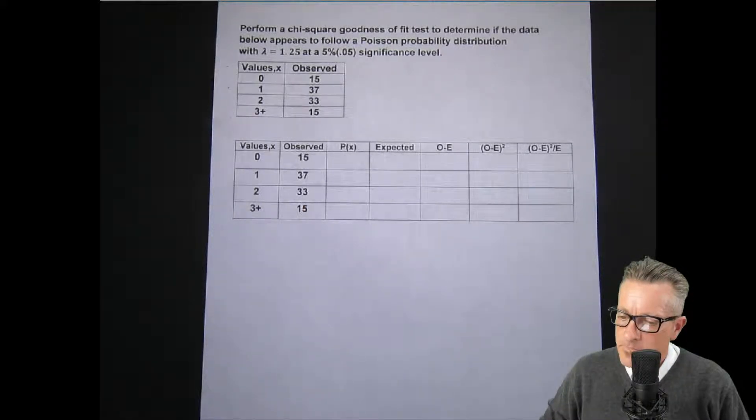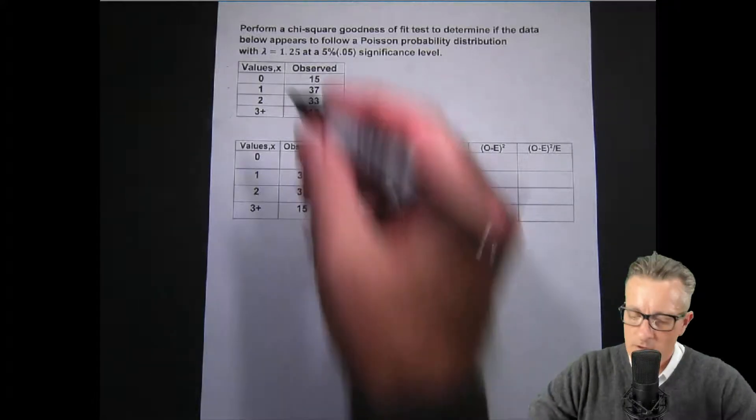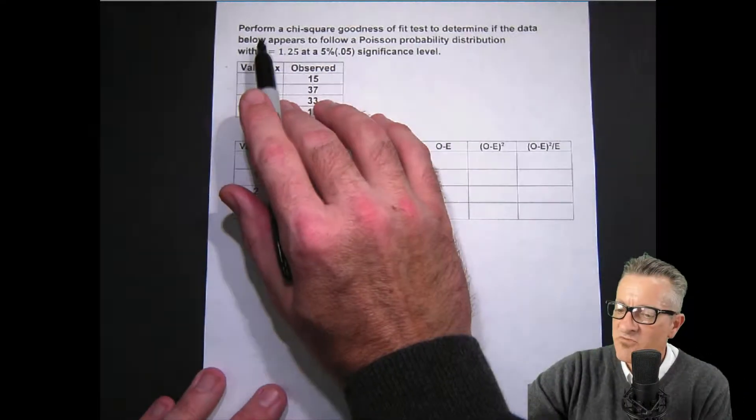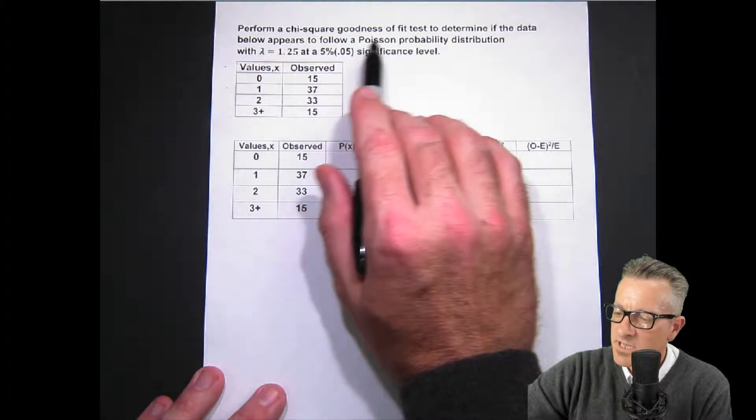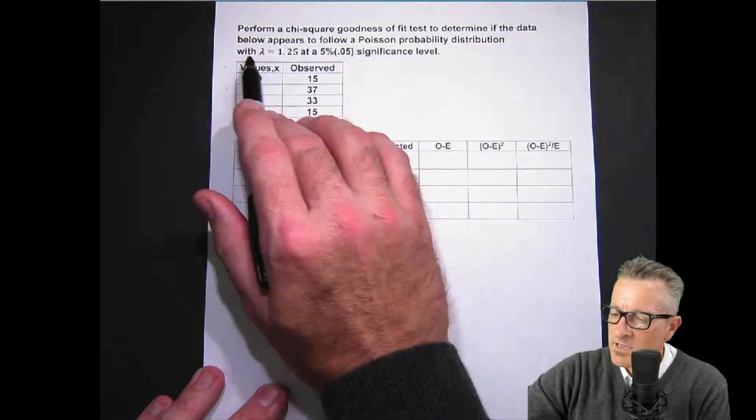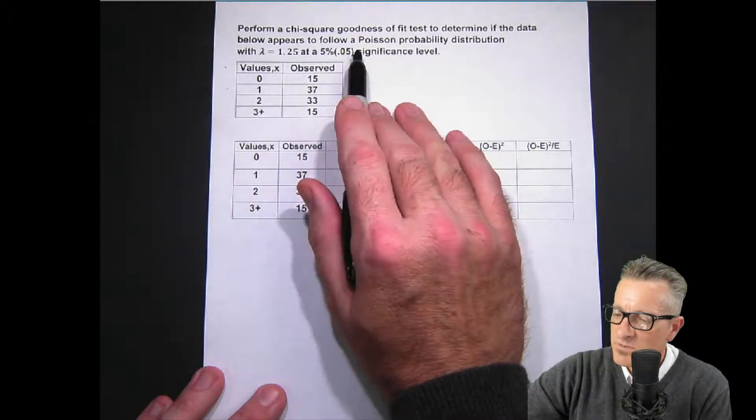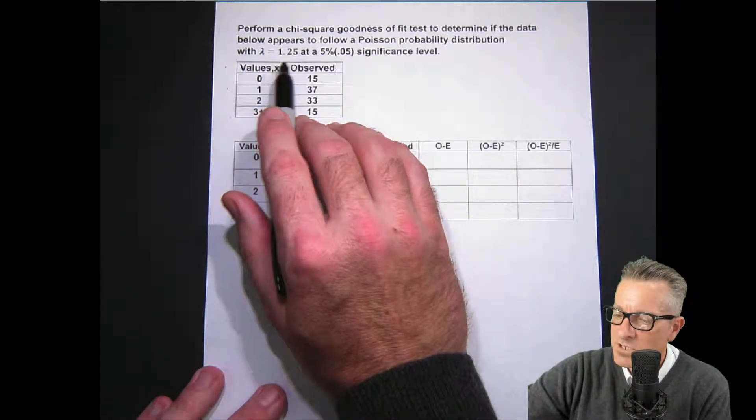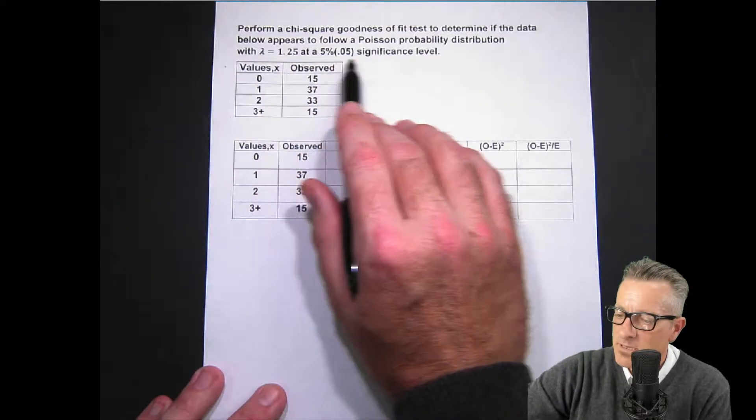Okay, we'll get started. The question says perform a chi-square goodness of fit test to determine if the data below appears to follow a Poisson probability distribution with lambda of 1.25 at a 5% level of significance.